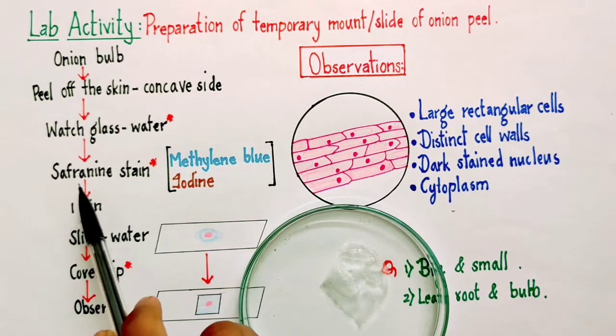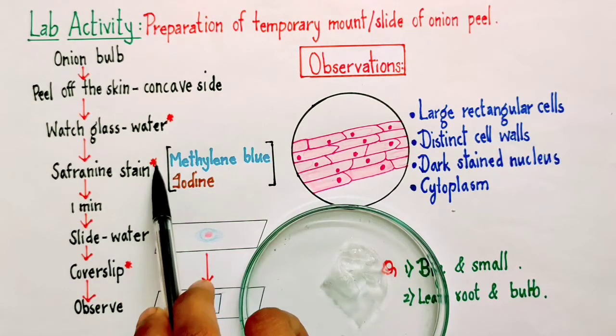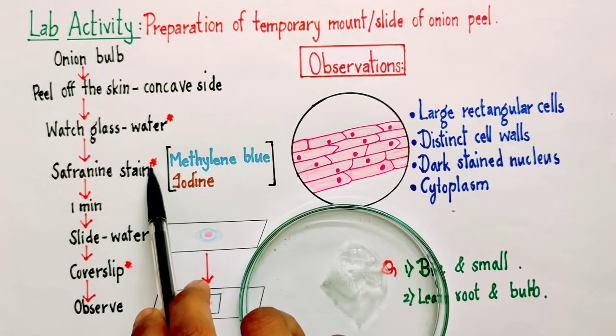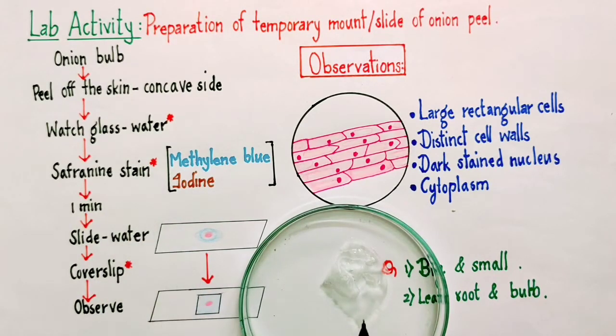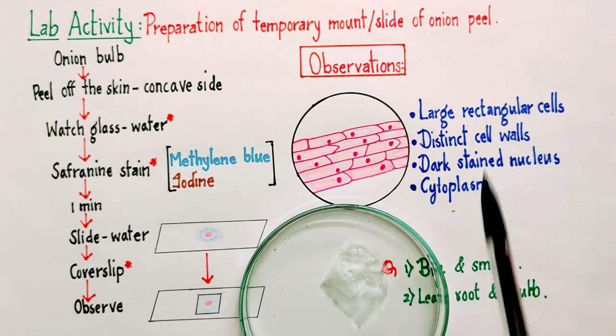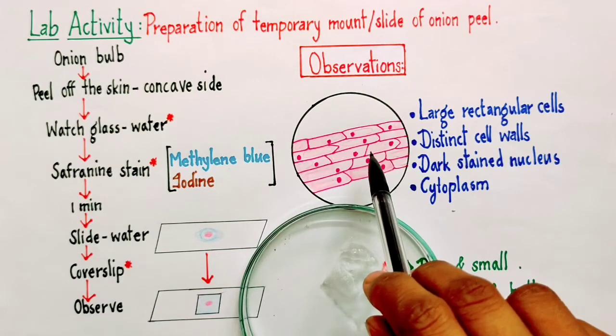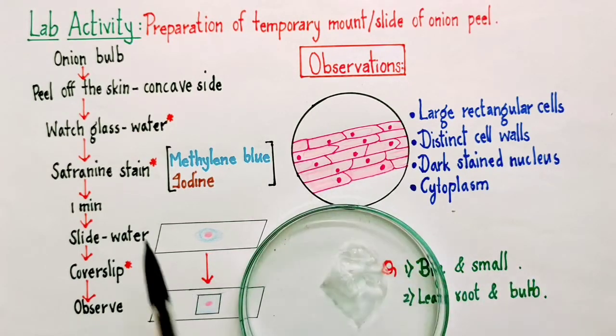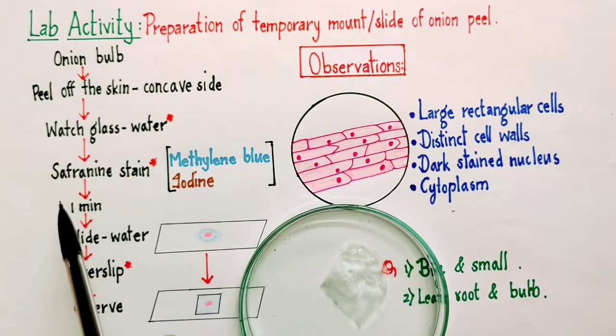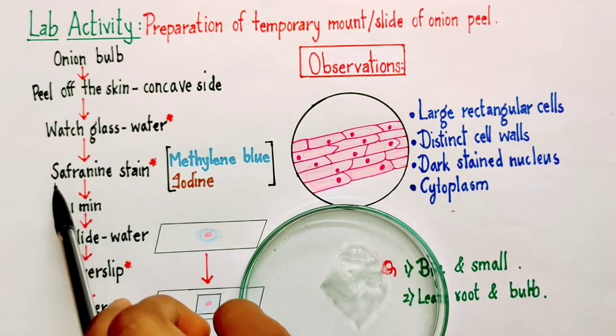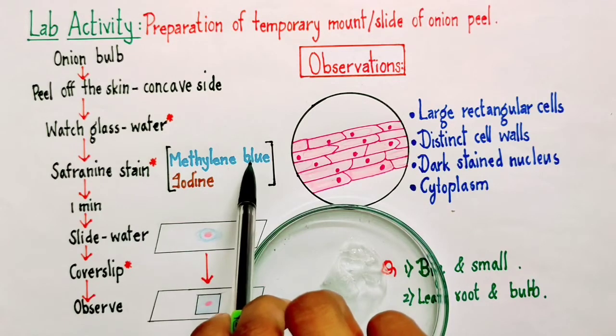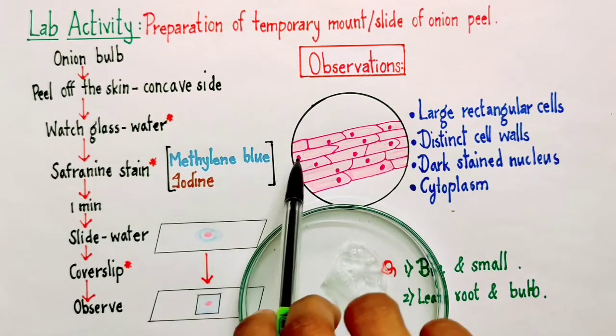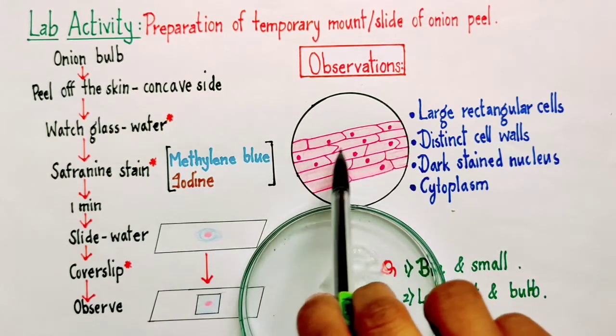Here in this case we are using safranin stain, which is going to be reddish to pink in color. If you add that stain, finally your cells are going to appear pinkish to red in color. Some part will be darkly stained, some part will be lightly stained. Other than safranin stain, we can also go for methylene blue. If you use methylene blue, your cells are going to appear in the shades of blue.